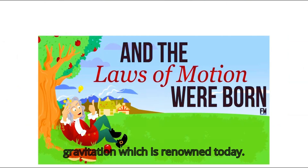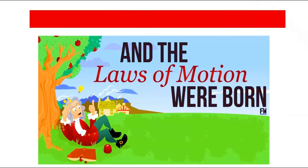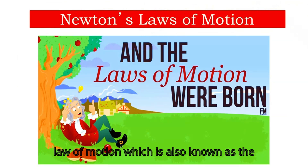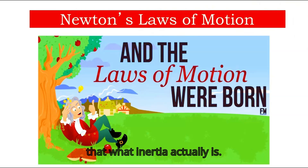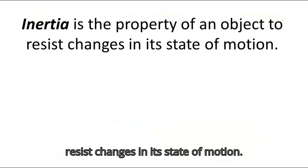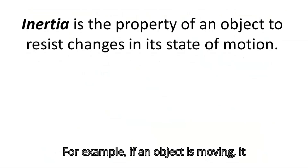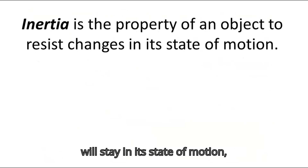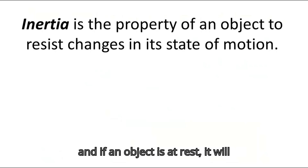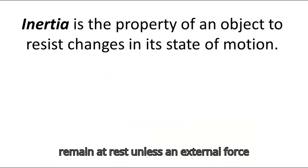Newton developed the laws of motion and the law of gravitation, which are renowned today. First, in order to study the first law of motion, also known as Newton's law of inertia, we should know what inertia actually is. Inertia is a property of an object to resist changes in its state of motion. For example, if an object is moving it will stay in its state of motion, and if an object is at rest it will remain at rest unless an external force is acted upon it.